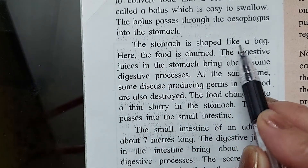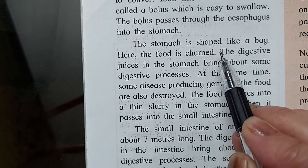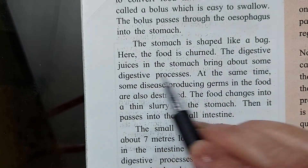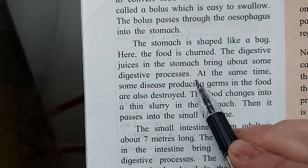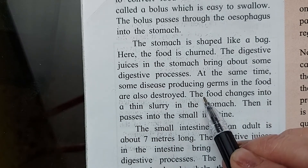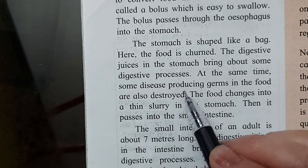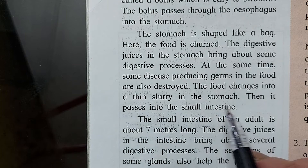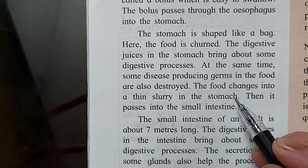The stomach is shaped like a bag. Here the food is churned — it gets mixed, like in a mixer. The digestive juices in the stomach bring about some digestive processes — some part of the digestion is done in the stomach. At the same time, some disease-producing germs in the food are also destroyed. The food changes into a thin slurry in the stomach.